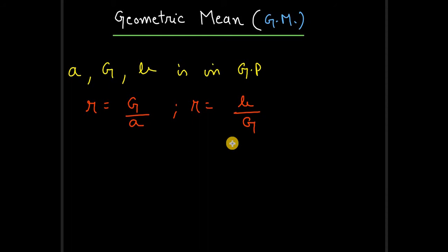So we'll just compare these two and can write something like this: we can write G by a equals b by G, right?